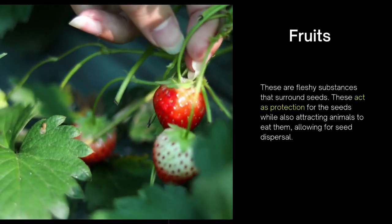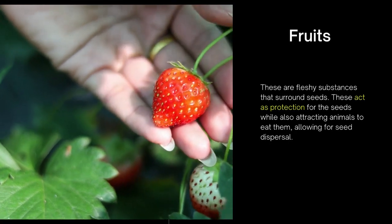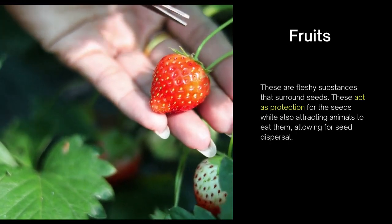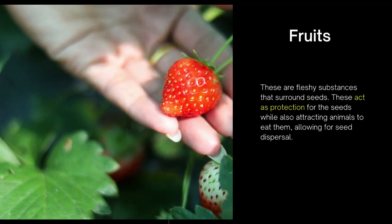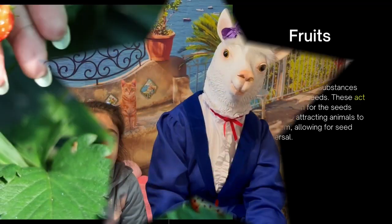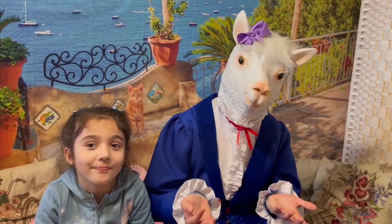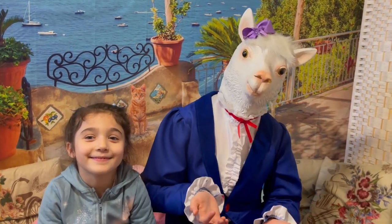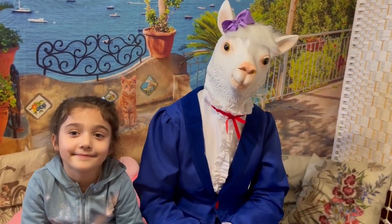The fruits are the fleshy substances that surround seeds. These act as protection for the seeds while also attracting animals to them. Okay kids, now that we know some facts about plants — the structure and many more things — let's see how we can grow our own plant.